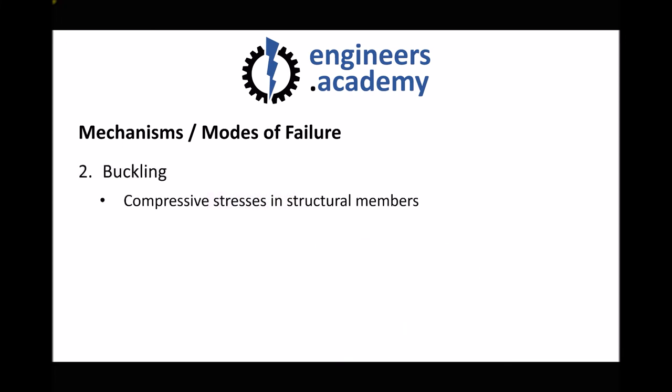Our next mode of failure is buckling, which also occurs under compressive stresses in structural members. Importantly, the compressive stresses are not significant enough to cause the material to yield on their own — this is a specific type of failure specific to what we call long slender members. A slender member is one that's long with a relatively narrow cross section, and there's a way of calculating how these are going to fail using something called the slenderness ratio. Structural members that are long with a narrow cross section are more likely to fail due to buckling, whereas if they have a relatively large cross section relative to their length, they're more likely to fail through overload.